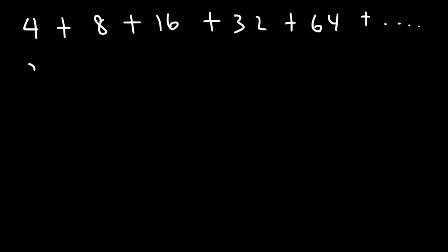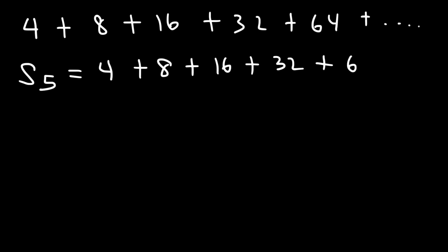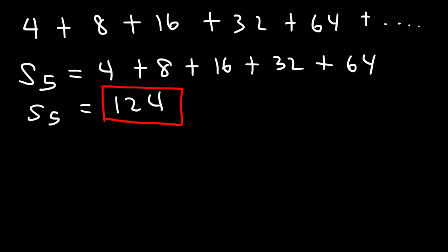So what is the sum of the first five terms? That's just going to be 4 — that's the first term — plus the second term, plus the third term, which is 16, and then the fifth term is 64. So the sum of the first five terms, also known as a partial sum, is 124. That's one way you can get the answer: simply by listing the terms and adding them up.